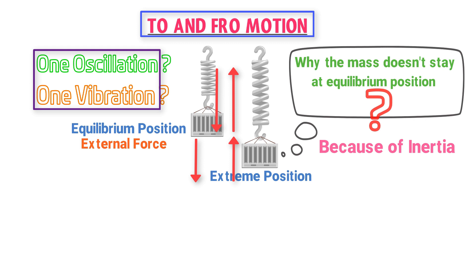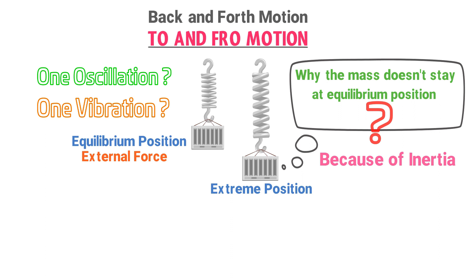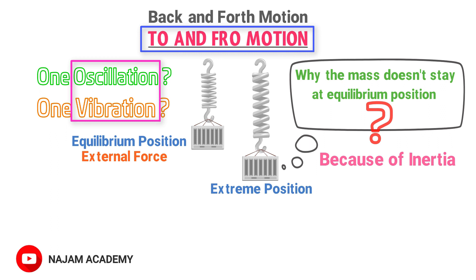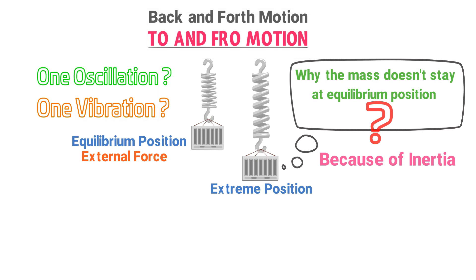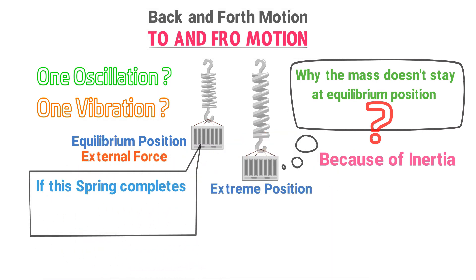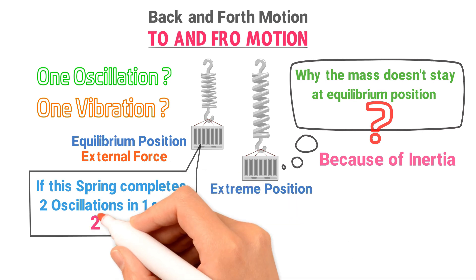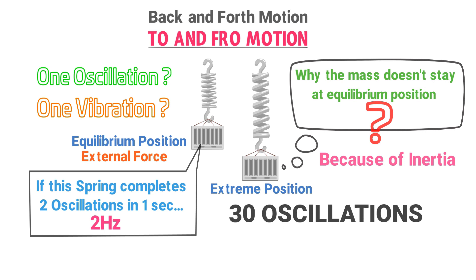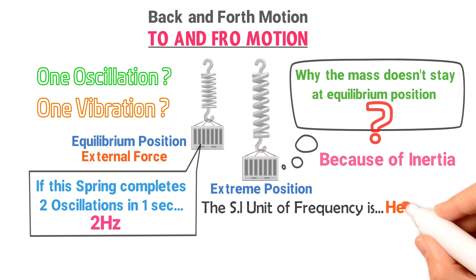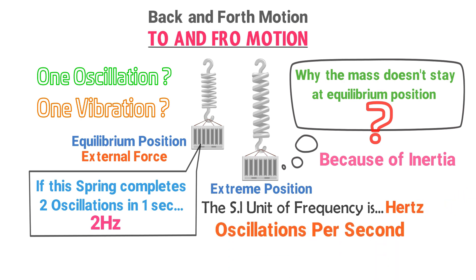To-and-fro motion is also known as back-and-forth motion, which always repeats itself over time. Oscillation and vibration are both to-and-fro motion. If this spring completes two oscillations in one second, its frequency is two hertz. If it completes 30 oscillations in one second, its frequency is 30 hertz. The SI unit of frequency is hertz, or oscillations per second, or vibrations per second.